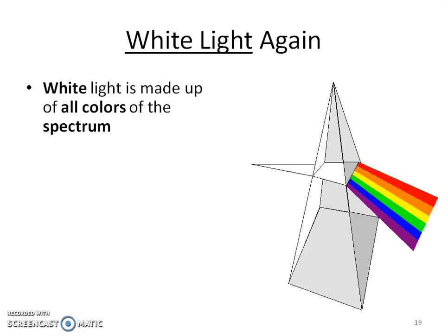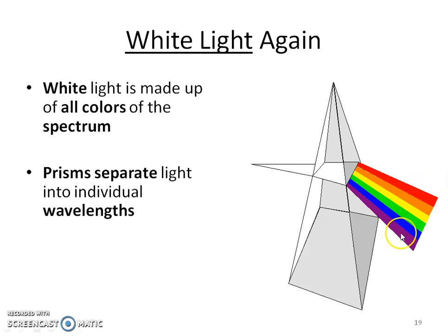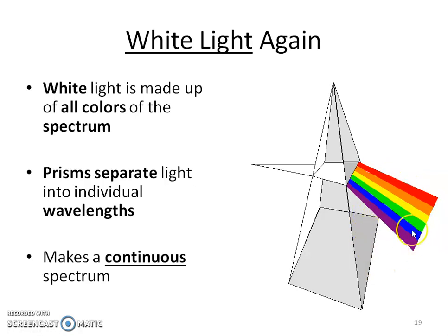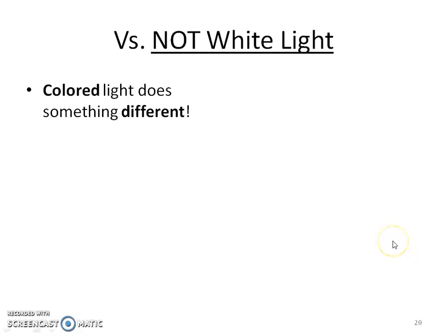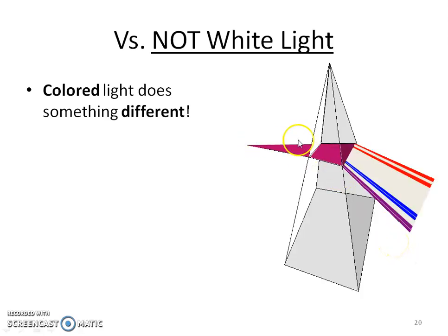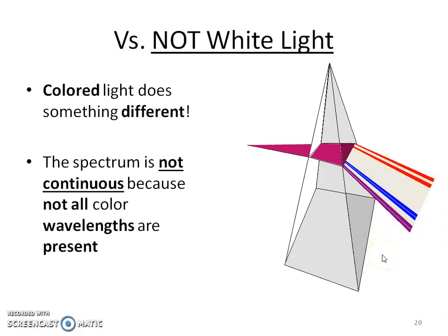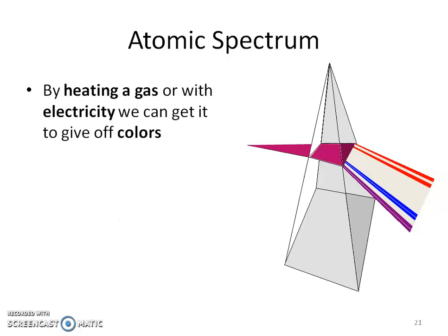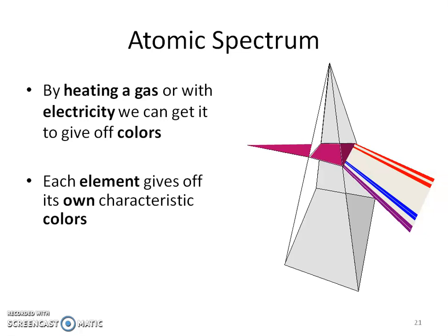If we look at white light, it gives us the entire spectrum and separates into individual wavelengths — this is continuous, going from red to purple continuously. But light that's not white gives us a different result. It is not a continuous spectrum — not all the wavelengths are present. This is actually what happens in the atomic spectrum and in those neon lights. We have a particular gas and give it some electricity or heat it, and it gives us different colors.